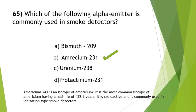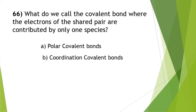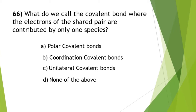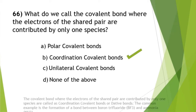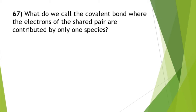If you have any doubt, comment in the comment section and we will reply. Question 66: what do we call the covalent bond where the electrons of the shared pair are contributed by only one species? The answer is option B — coordinate covalent bonds. A common example is the formation of a bond between boron trifluoride (BF₃) and ammonia (NH₃). It is better to write these points as writing is equivalent to reading something ten times.